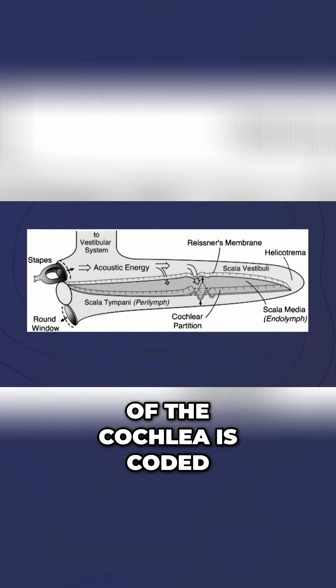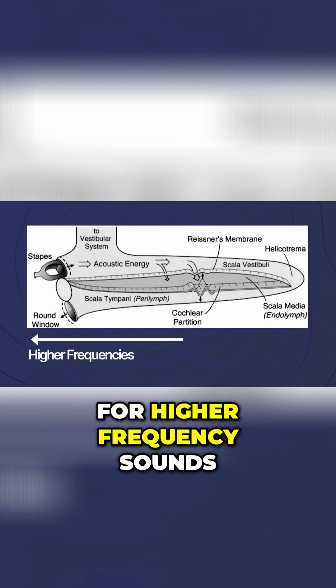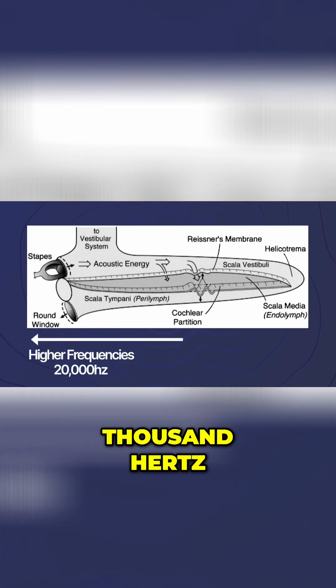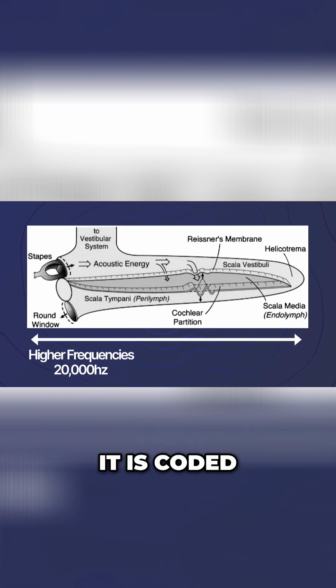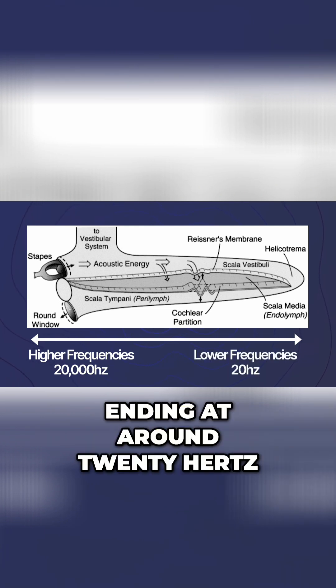The membrane near the entrance of the cochlea is coded for higher frequency sounds starting at around 20,000 hertz, and as the membrane travels deeper into the cochlea it is coded for lower frequency sounds ending at around 20 hertz.